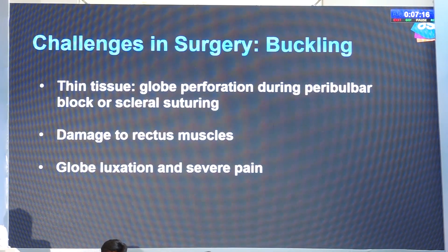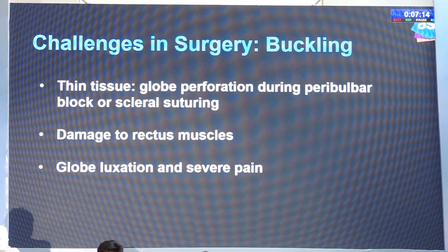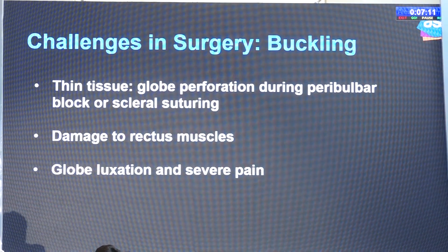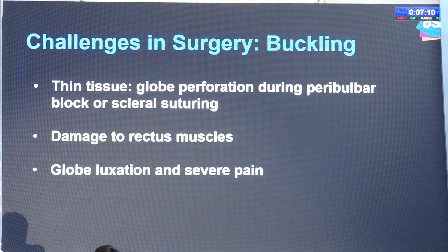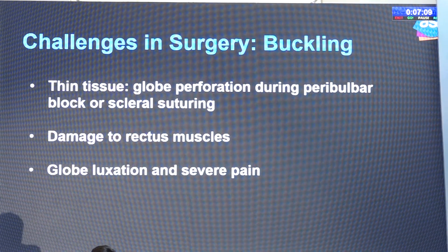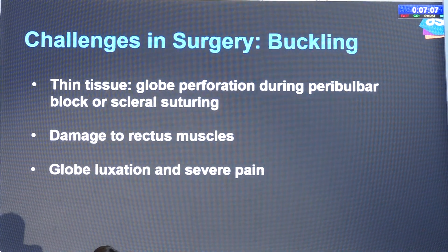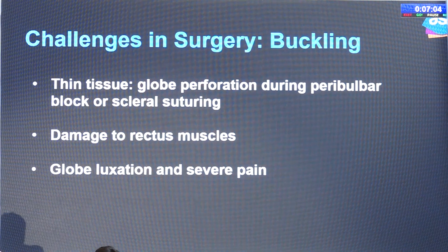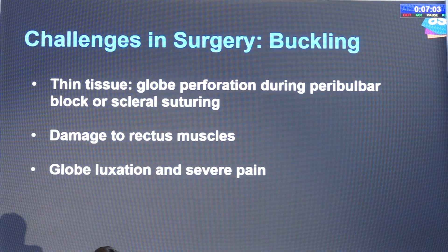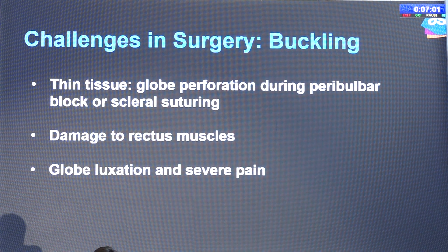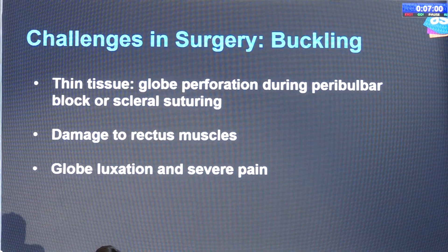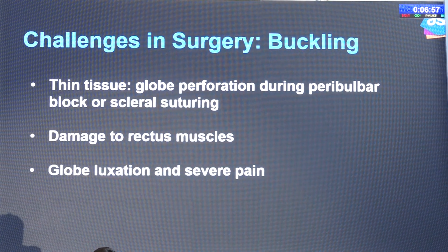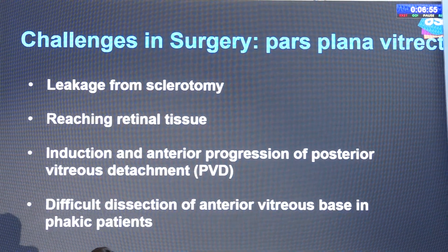In buckling, the tissue might be so thin that there might be globe perforation while doing the buckle or suturing the sclera, passing the needle through the sclera. The rectus muscle may be damaged or disinserted, and in some cases the speculum can go behind the globe, causing severe pain and globe luxation during the surgery.